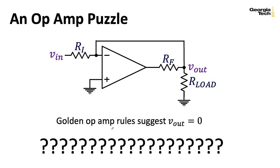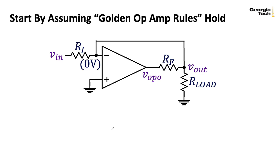Well, let's actually for a second assume that the golden op amp rules are holding. So we're assuming that the negative terminal is indeed zero volts. I'm going to use V with a subscript OPO to represent the output at the op amp. So the OP here stands for op amp. Here, the Vout is the actual thing that I'm considering to be the output of this kind of circuit. All right, so if we go ahead and write a KCL equation for this node here, I would have VIN minus zero divided by RI. I would have VOPO minus zero divided by RF.